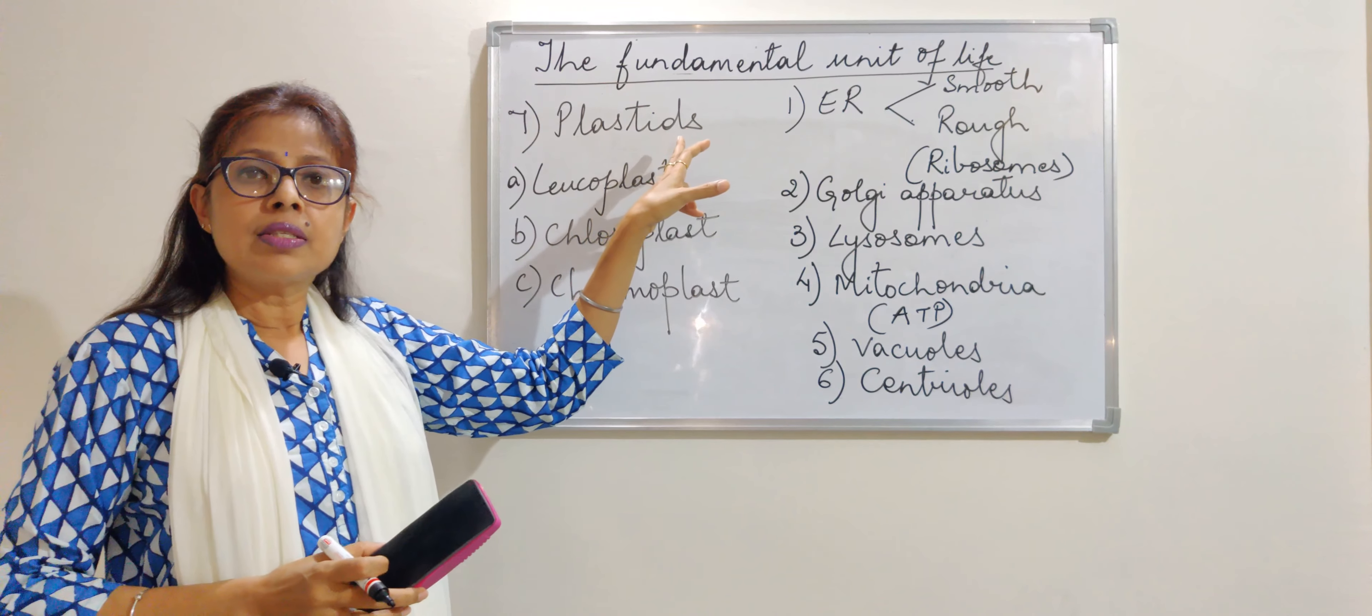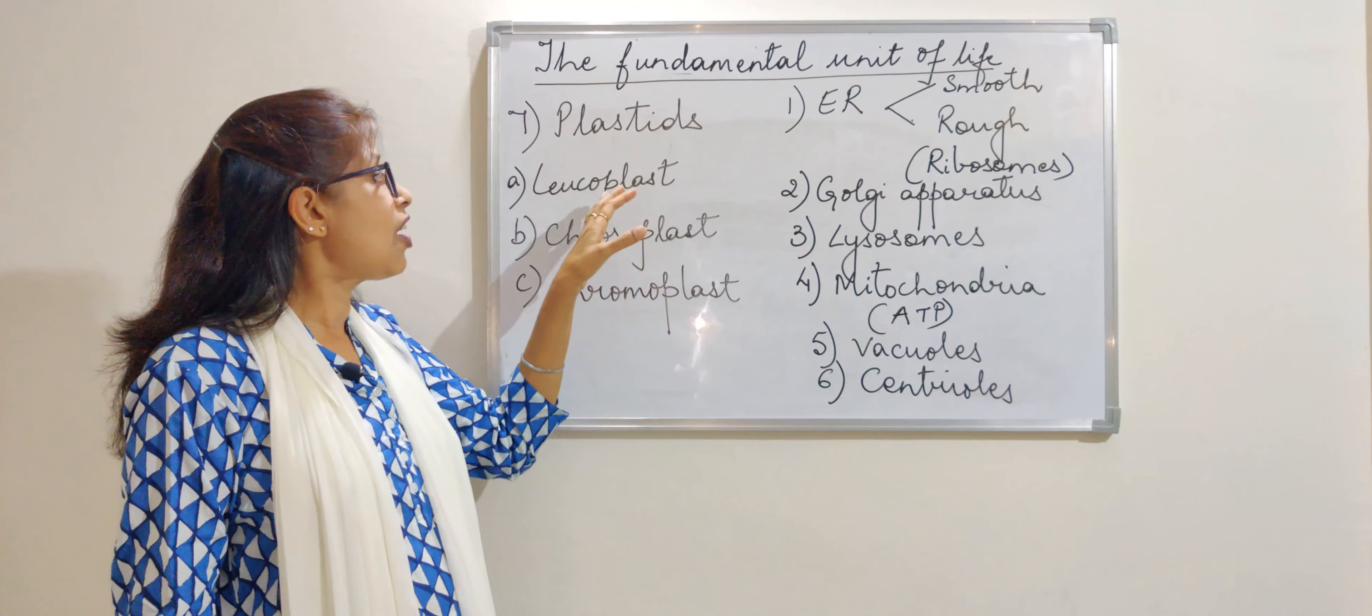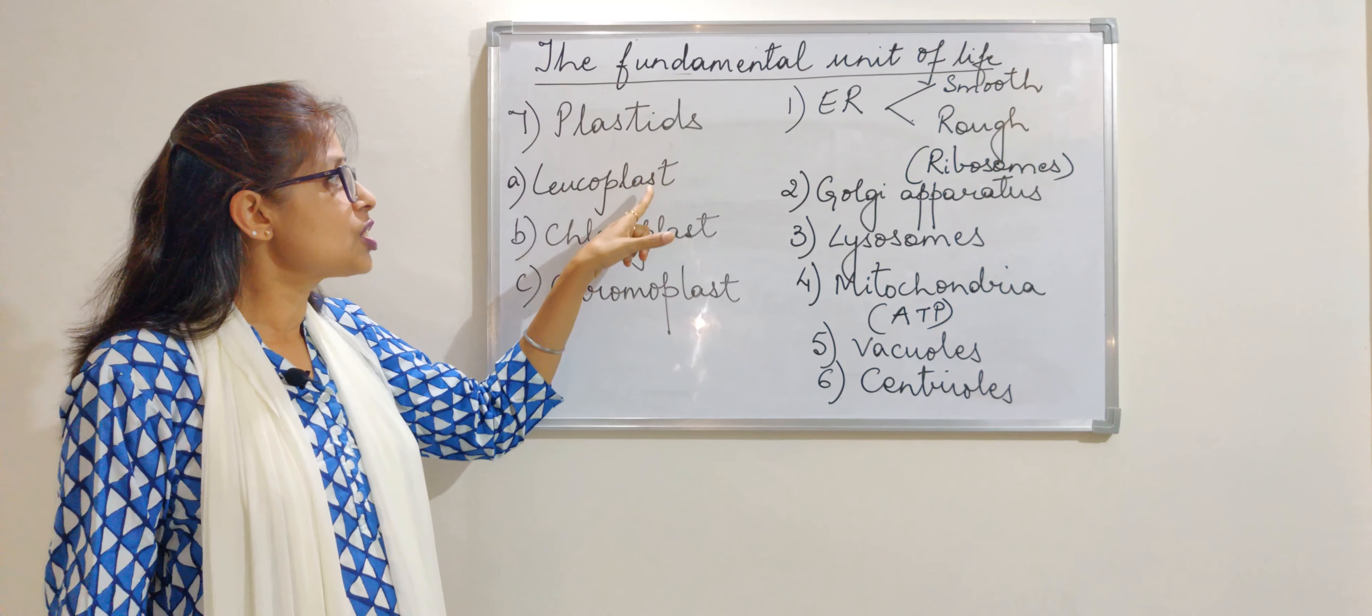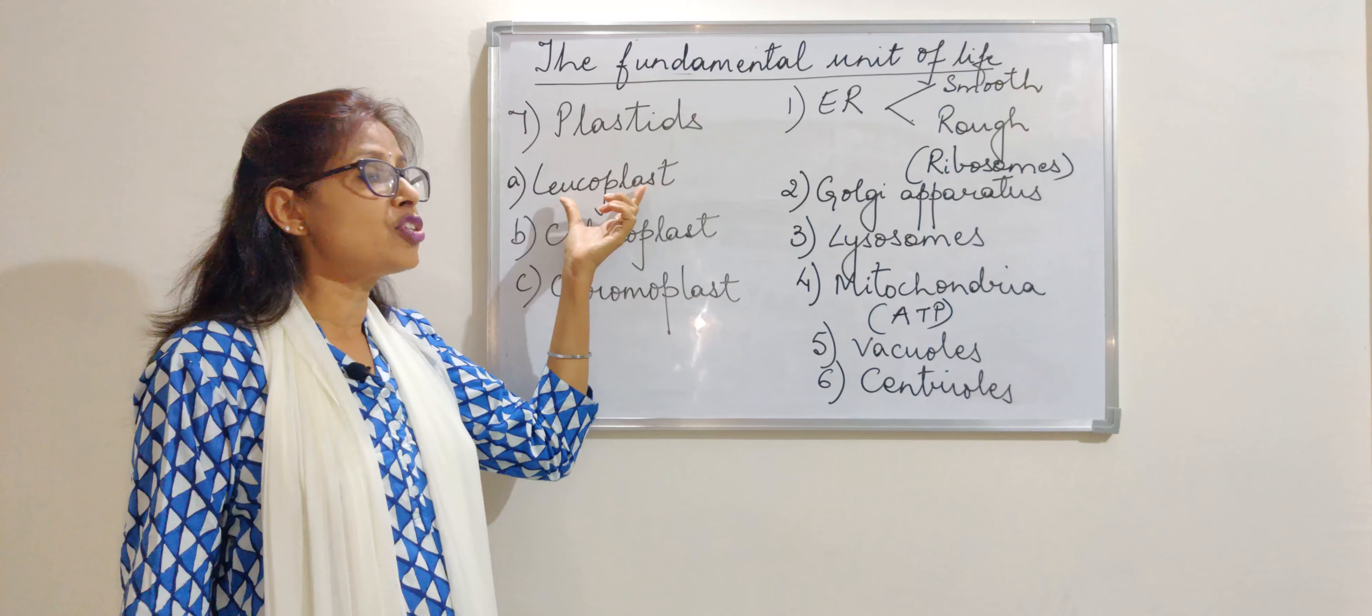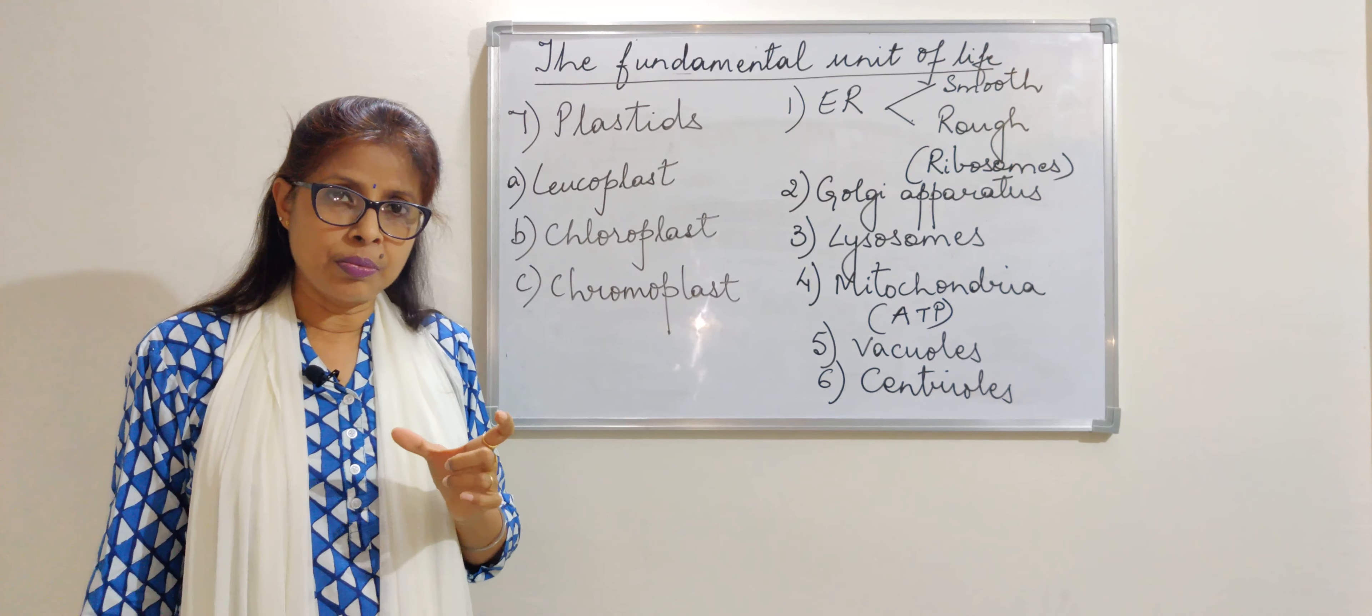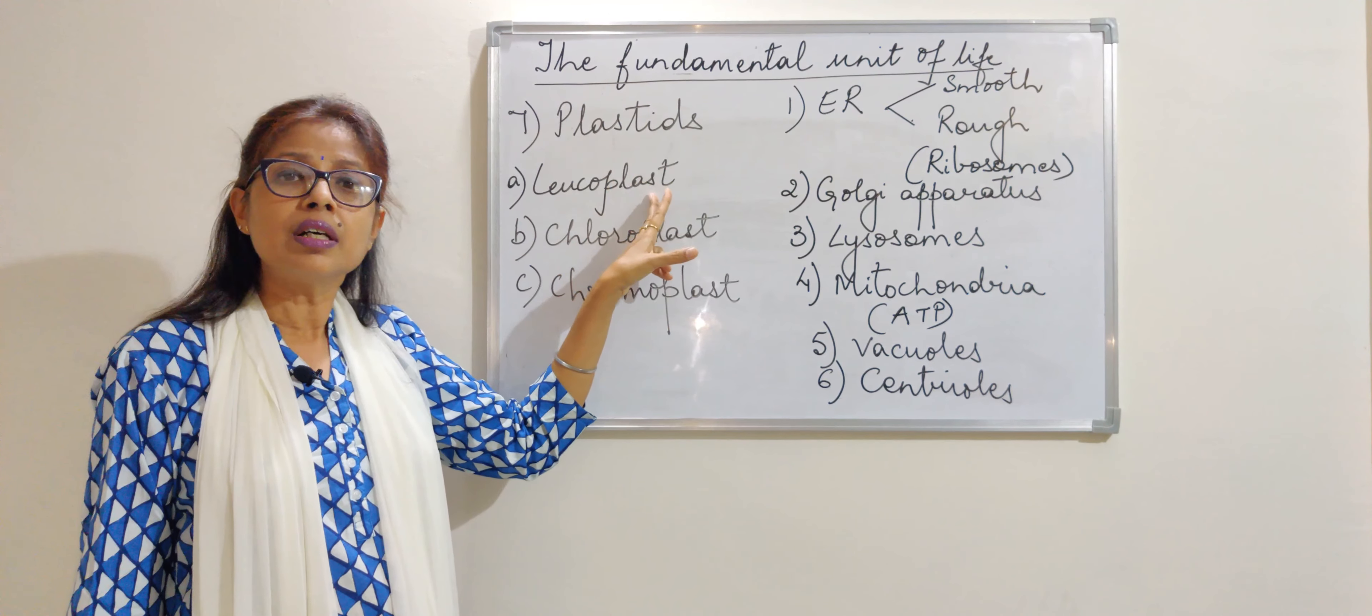These plastids, since they show different colors, they have been called by different names. The plastids which is present in the roots, which actually stores some amount of proteins and fats, are said to be leukoplast, and they are colorless in their color. That means they do not have color and they are present in the roots.